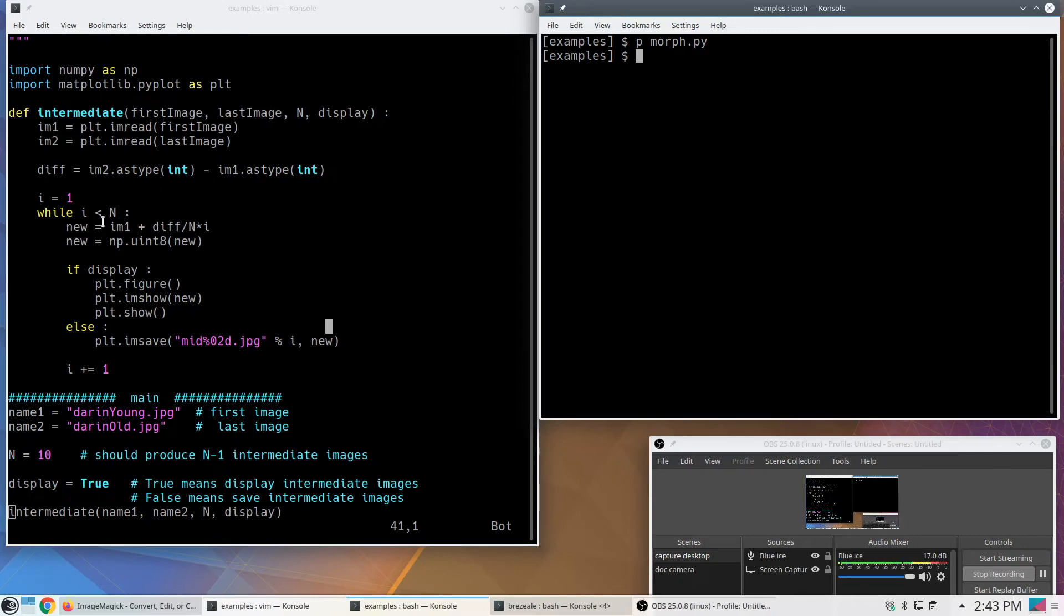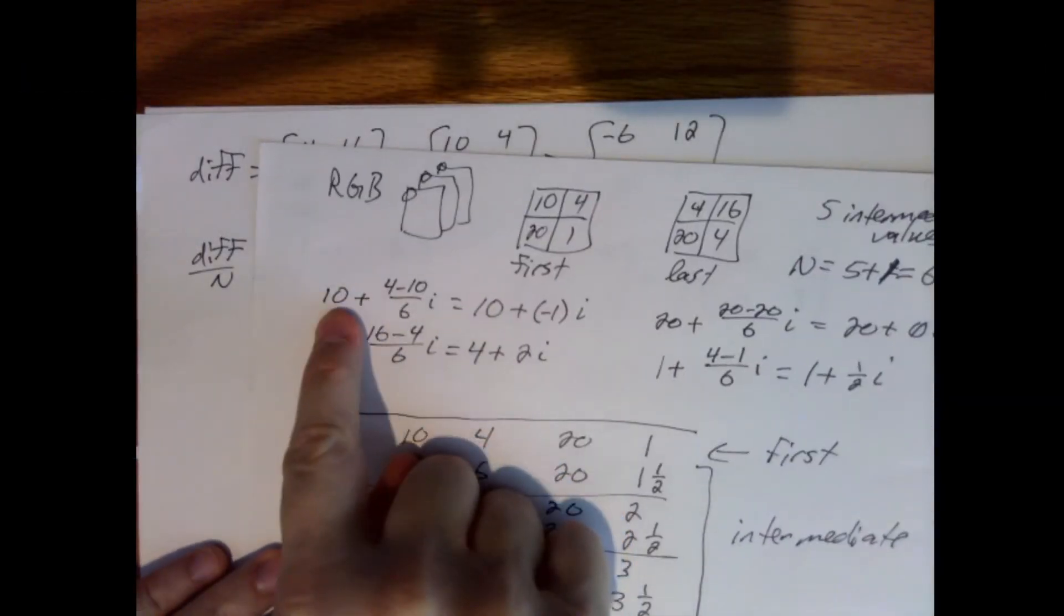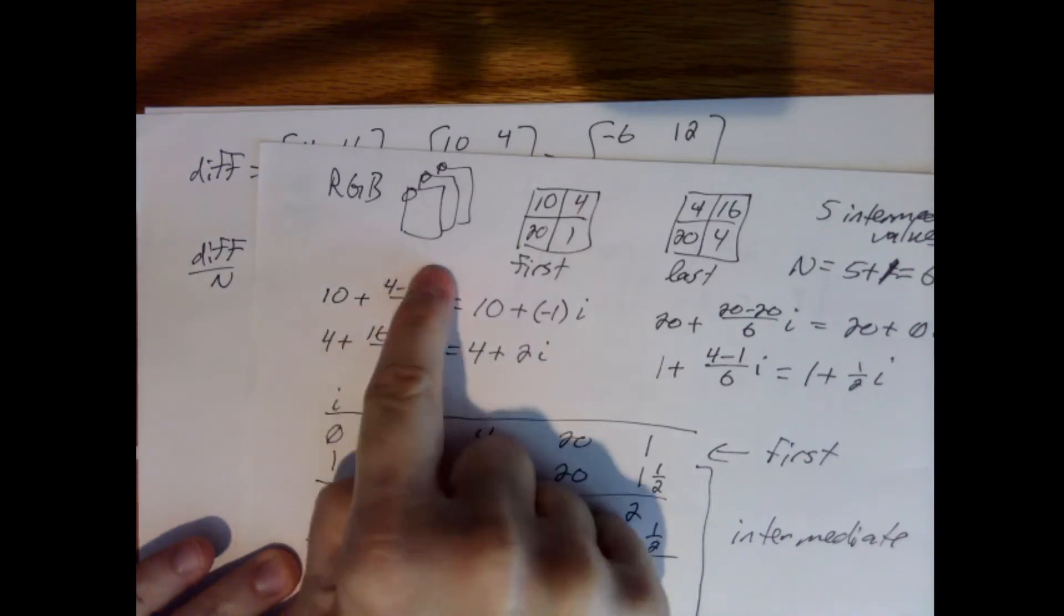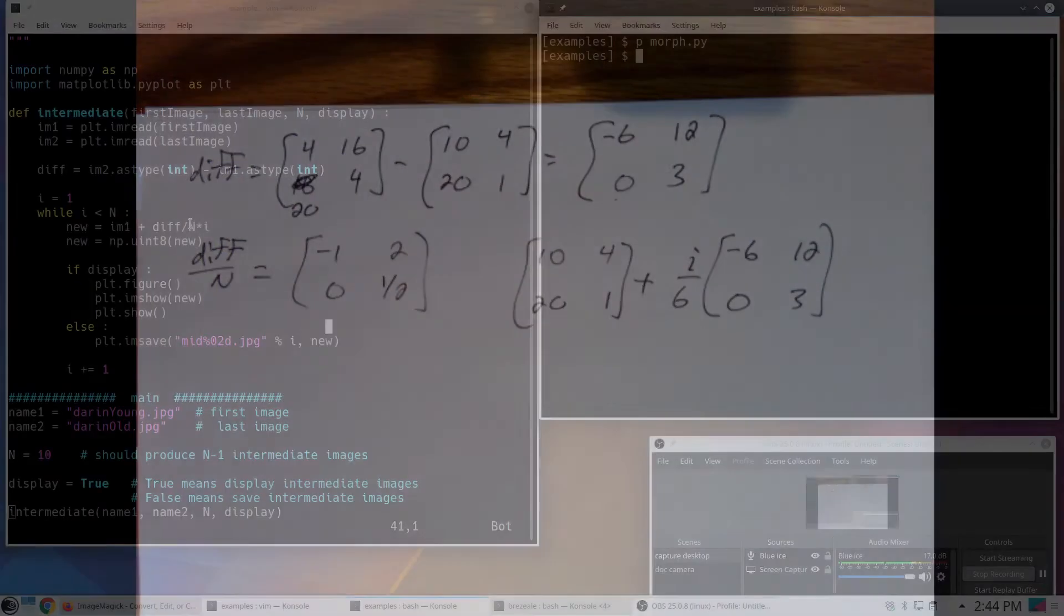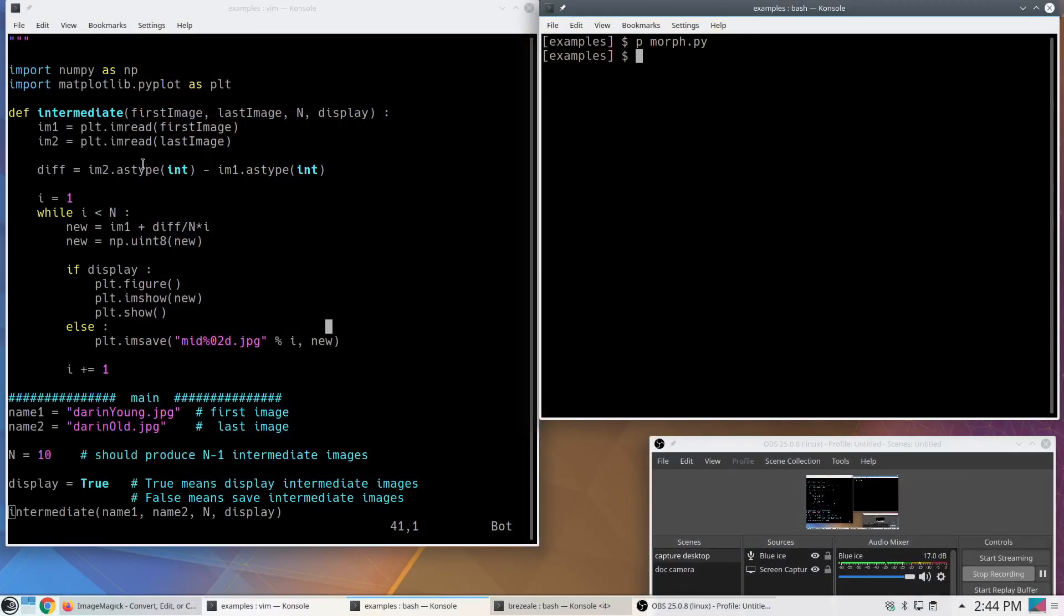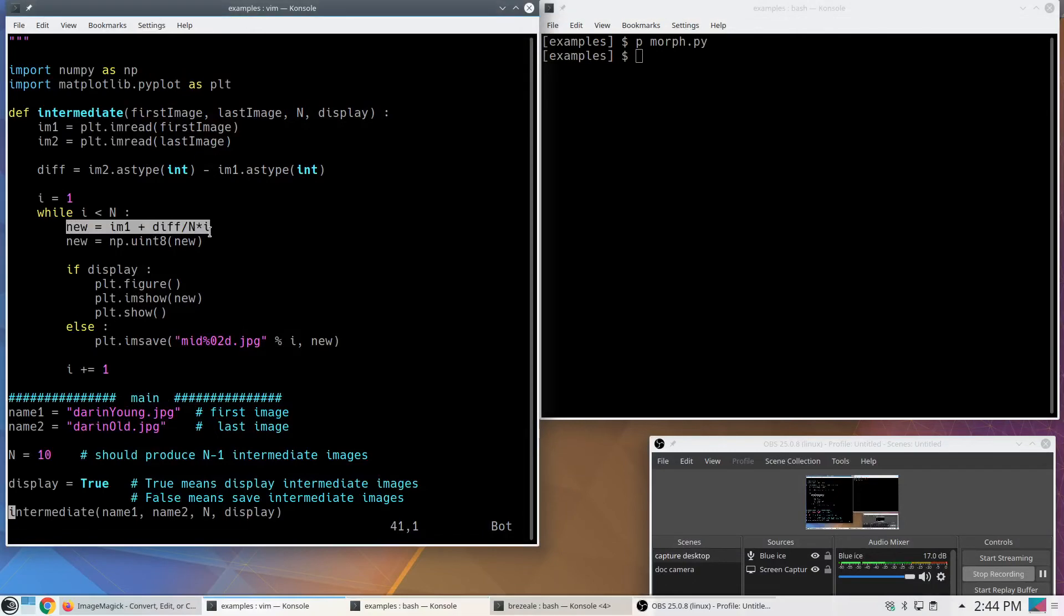Here's where I produce the new values. So it's im1 plus the difference between the images divided by n times i. If we go back to my formula, that's like what I'm doing here. Going from 10 to the difference between the two images divided by n times i. So I did it all in one line of code. Now to save the image though, it still needs to be an unsigned 8-bit int. So here's where I convert it back. So it really took two lines of code to do the work, or three if you want to count this. And then here's code that says either show it to me or save it.